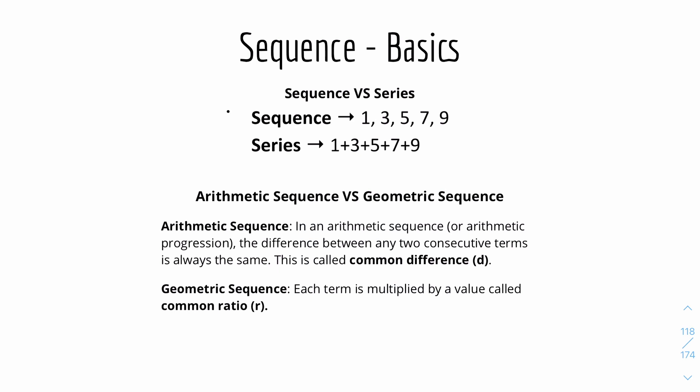Now we'll look into sequence vs series. A sequence is basically numbers laid out like 1, 3, 5, 7, 9, where there's a specific expression for the nth term — it could be like 3n minus 1, 5n minus 1, or 5n plus 2. A series, however, is basically the numbers in the sequence added up together. So if a sequence has 1, 3, 5, 7, 9, the series would be 1 plus 3 plus 5 plus 7 plus 9 and so on — specifically the sum.